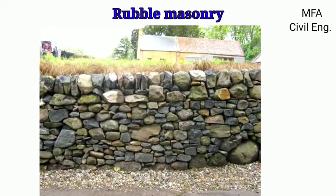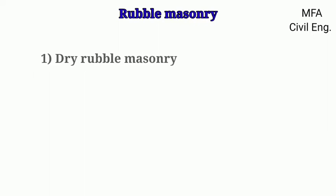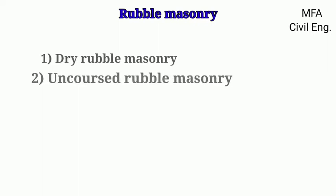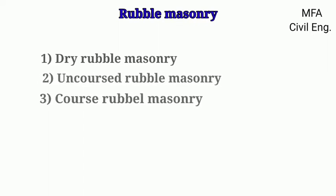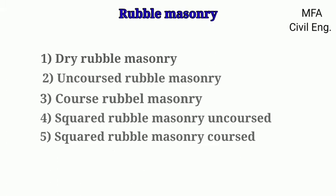Hello everyone, my name is Fazal, you are watching MFA Civil Engineering. Depending on the degree of dressing, the rubble masonry can be divided into various groups like dry rubble masonry, uncoursed rubble masonry, coarse rubble masonry, squared rubble masonry uncoursed, and squared rubble masonry coursed.